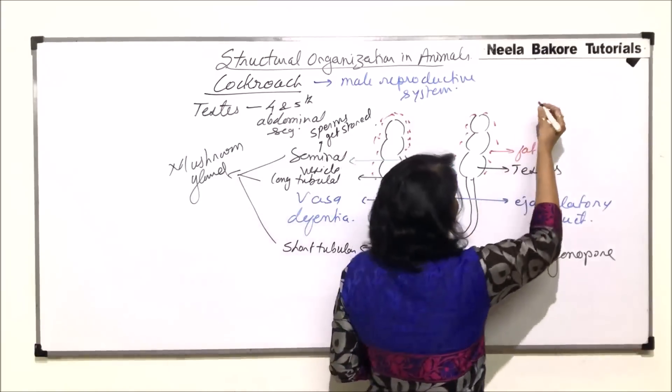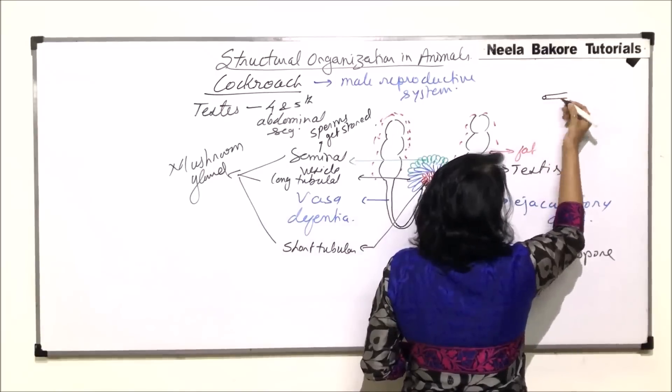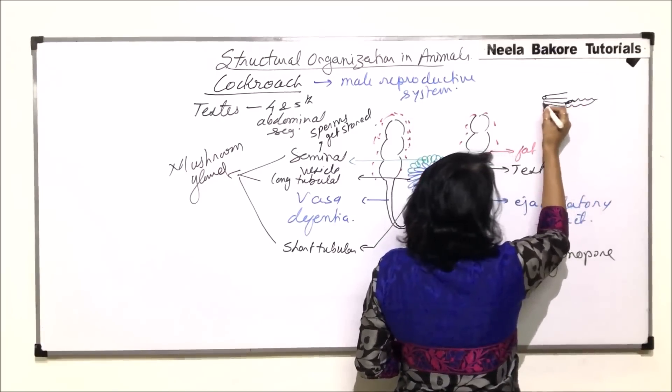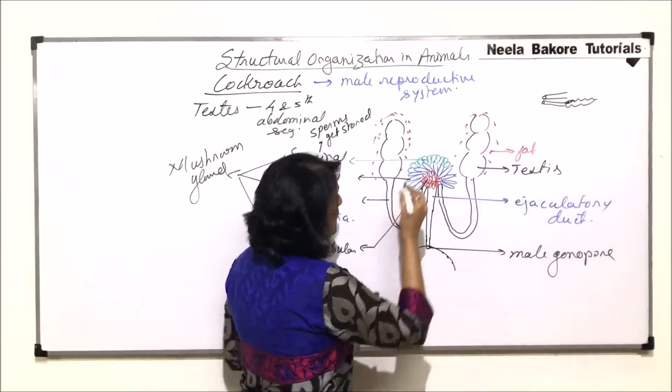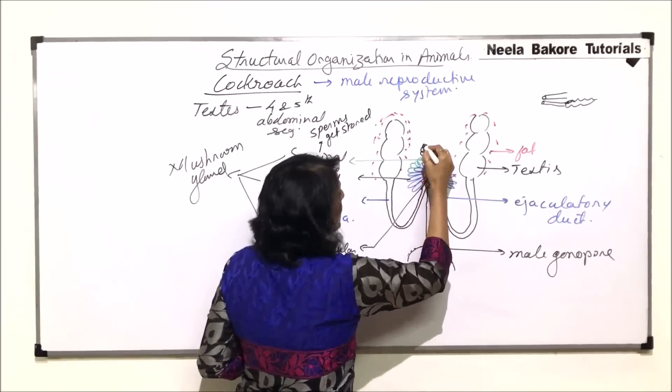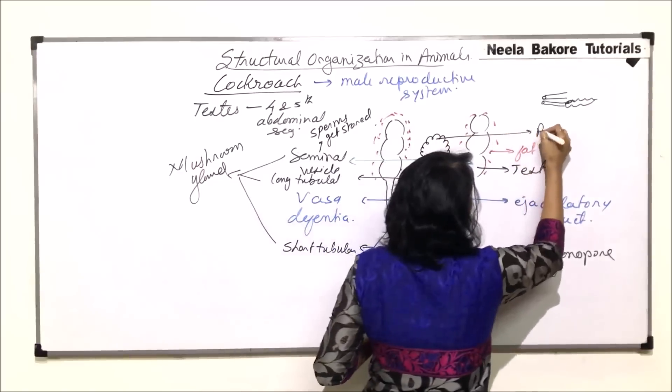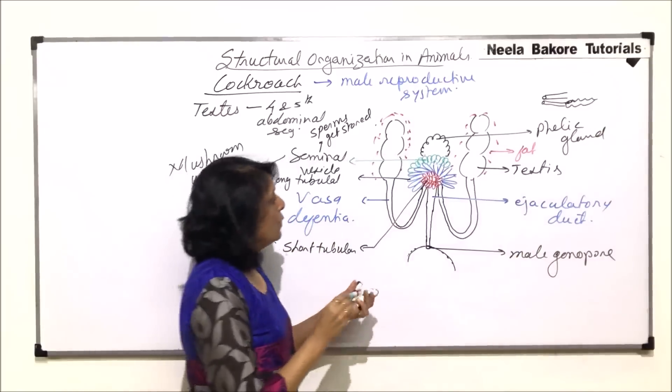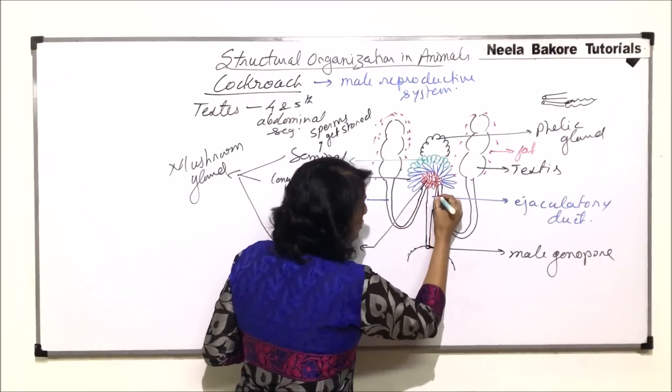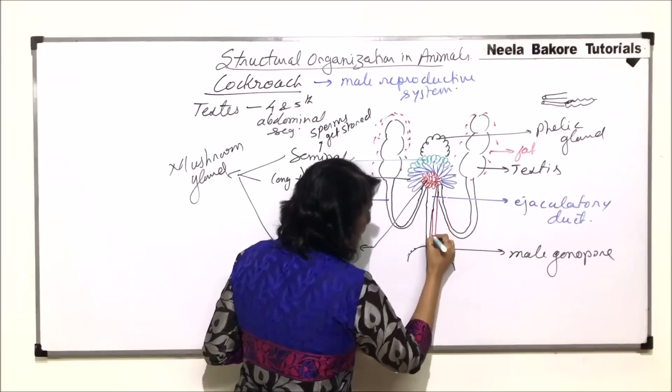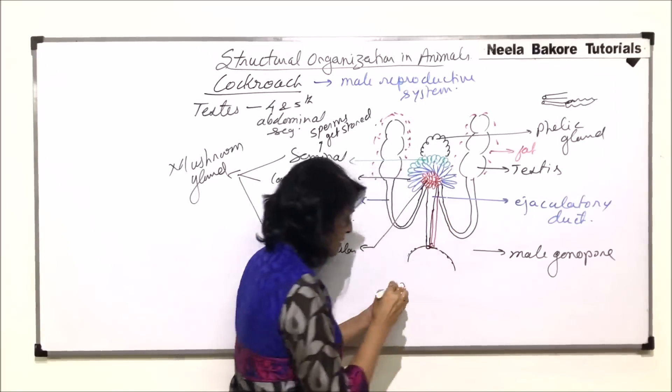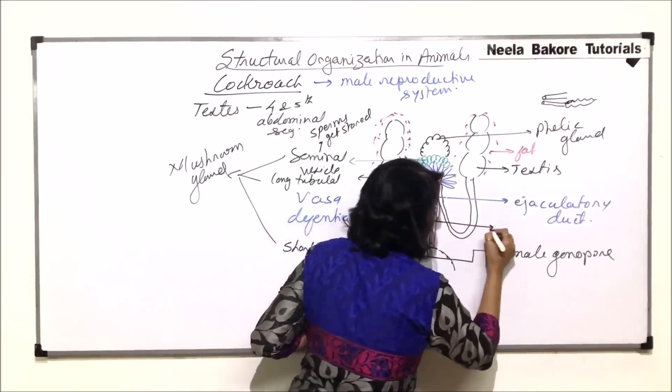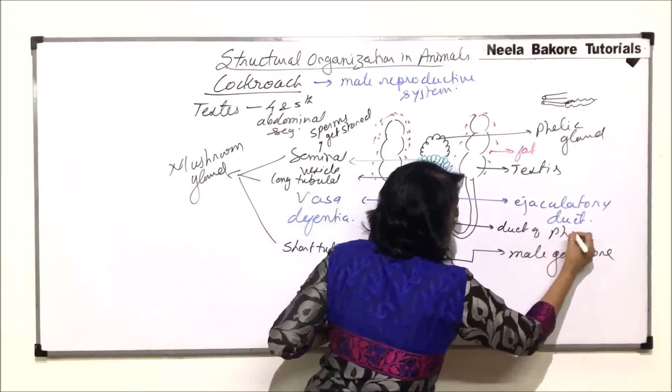So this is the male gonopore which is there and it opens into a small sac-like structure. There is one more gland which is present and that gland is present behind it. If I draw a transverse section, say this is the ejaculatory duct, we would find one more gland which is behind it and its duct would open just underneath it. So we would find one more gland here which is a large gland and this gland is known as phallic gland. The secretion of phallic gland would be released by the tube and the tube is going to run very close to the ejaculatory duct.